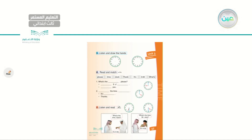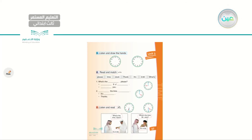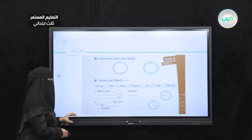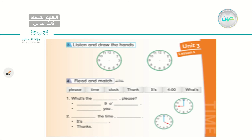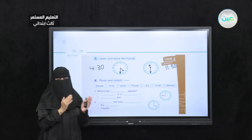Now I need you to open your books at page 37. Have your books and some pencils because we need to do some drawing. Let's start with exercise 3: Listen and draw the hands. Here I have two clocks with no hands. The first one: the time is 4:30, so let's draw the hands — half past 4. For the next one: 11:30. Let's draw the hands. 11:30, or half past 11.